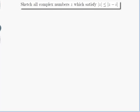The question is sketch all complex numbers z which satisfy |z| ≤ |z - i|.